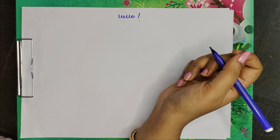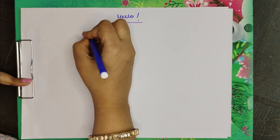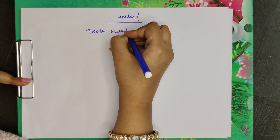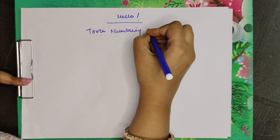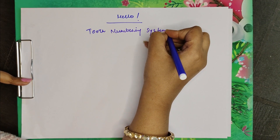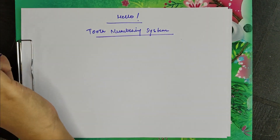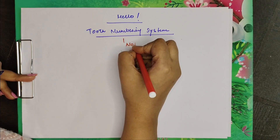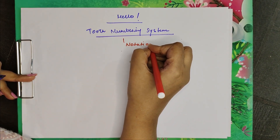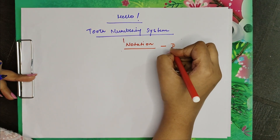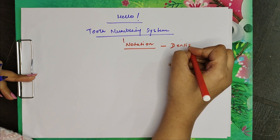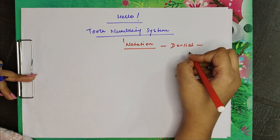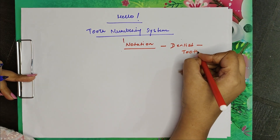Today's video is going to be about the tooth numbering system. It is a notation used by a dentist to denote and specify information linked with a particular tooth.